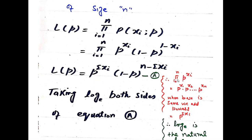When i varies from 1 to n with Pi notation applied to p^xi, we write p^x1 · p^x2 · ... · p^xn. Because when the base is the same, we add the powers, giving p^(Σxi). Similarly, (1 - p) multiplied n times gives (1 - p)^(n - Σxi). This is equation A.